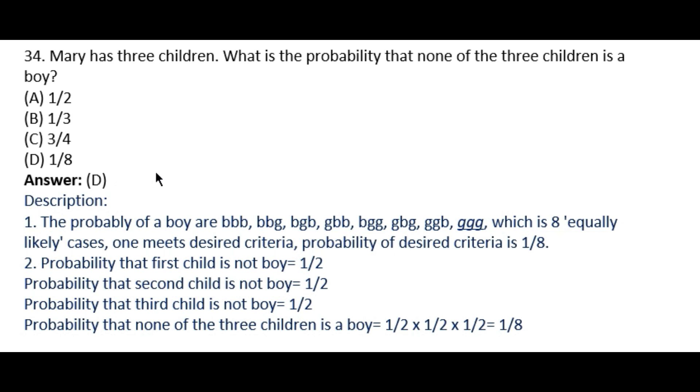How to calculate this type of problem? The probability of boy arrangements: boy boy boy, boy boy girl, boy girl boy, and so on. First arrange them - there are 8 equally likely cases. One meets the desired criteria, so the probability of the desired criteria is 1/8. What is the criteria? None of the three children is a boy, so girl girl girl - none of them is a boy.